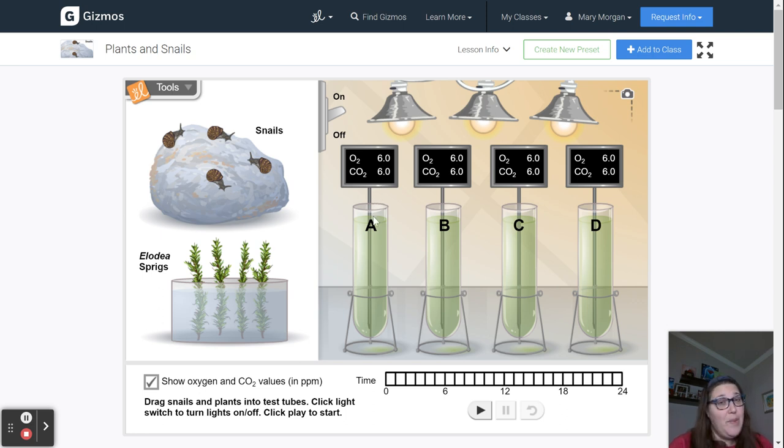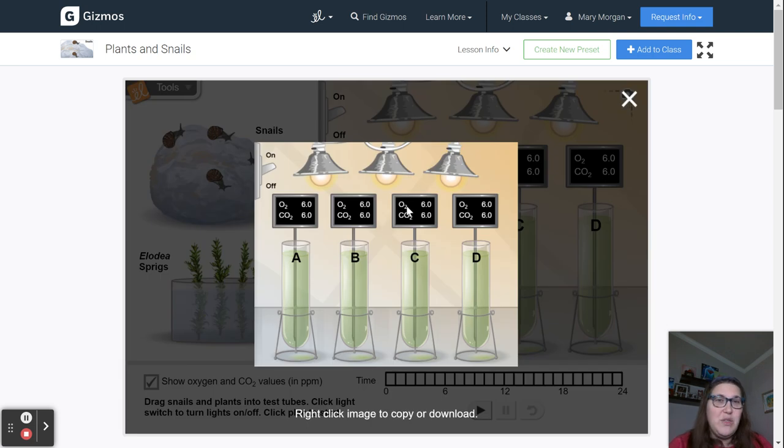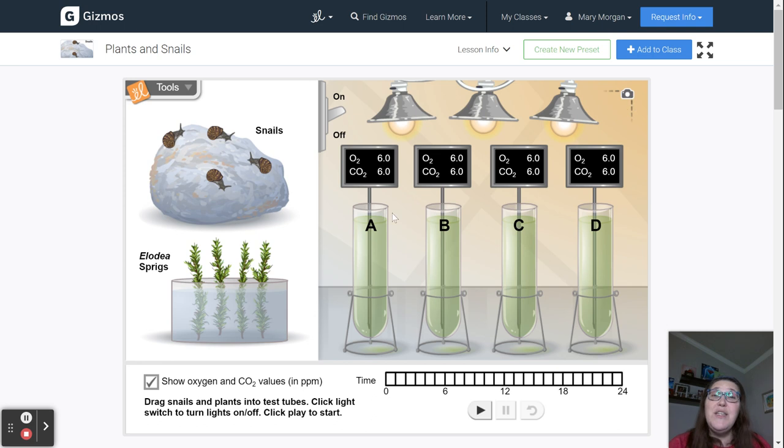Now at some points during your lab, you'll be asked to take a screenshot and add that to your lab document. To screenshot your Gizmo, click on the camera in the top right corner. Once the screenshot has processed, you can download the screenshot to your computer by right-clicking and choosing save image as, then selecting the file on your computer where you would like to save it. If you'd rather just copy and paste the image directly into your lab, you can do that by copying the image, going to your lab document, and pasting it in there. When you're done with the screenshot, click on the X in the top right corner to close that screenshot.